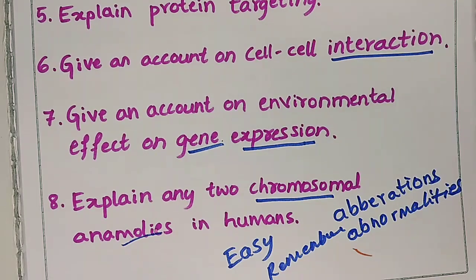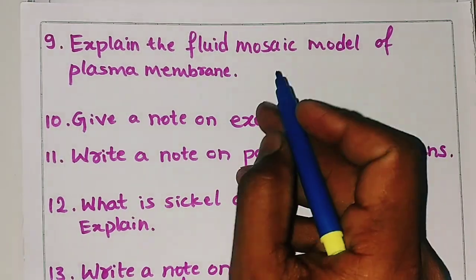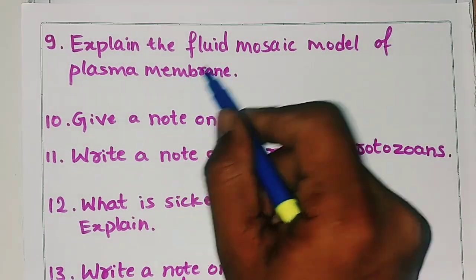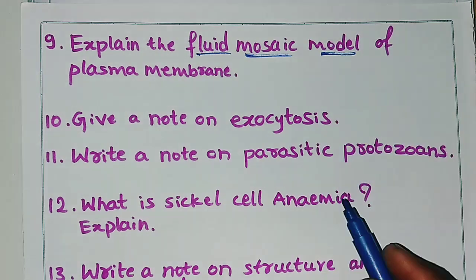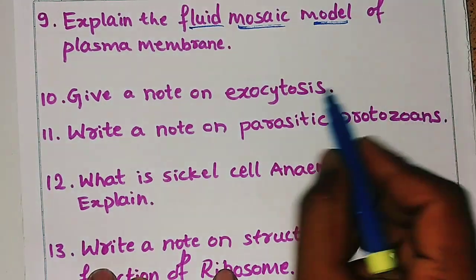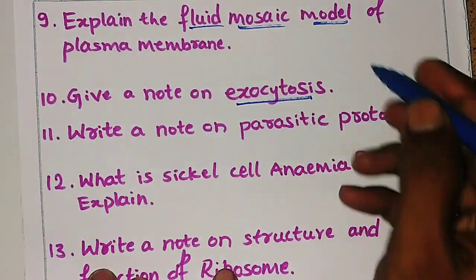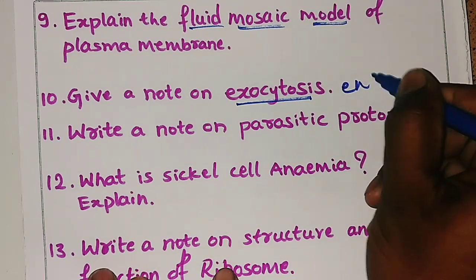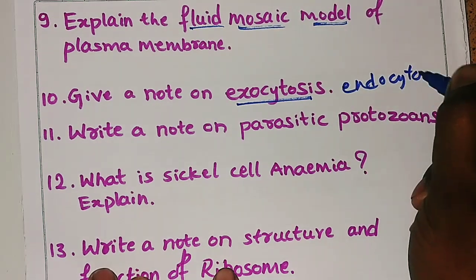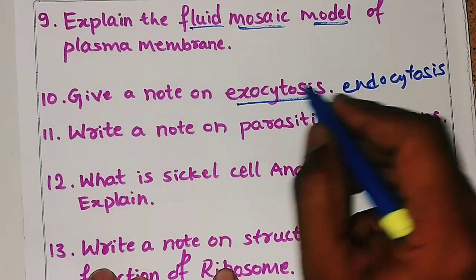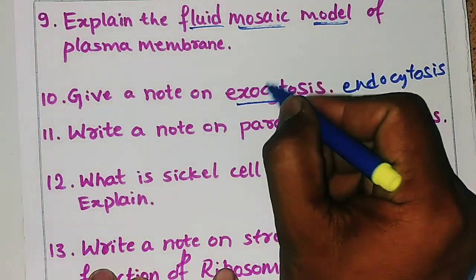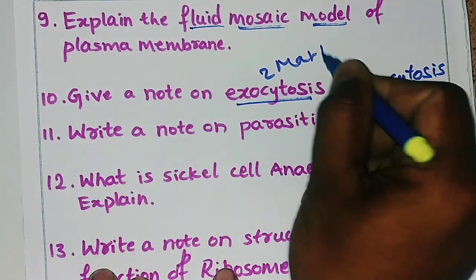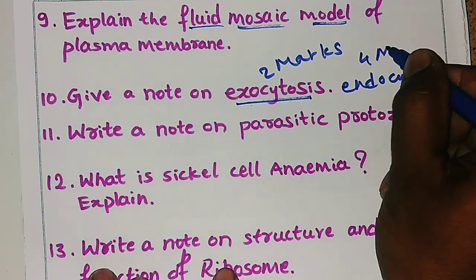The ninth question is: explain the fluid mosaic model of the plasma membrane. The tenth question is: give a note on exocytosis, and there is also a related topic — endocytosis. These are very important topics. They may ask exocytosis in two marks and endocytosis in four marks, or vice versa, so be prepared for both.